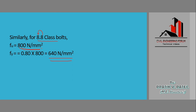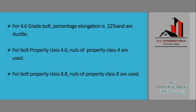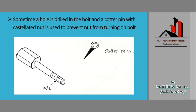For 4.6 grade bolts, the percentage elongation is 22%, making them ductile. Regarding the nut: for a bolt of property class 4.6, a nut of property class 4 is used. For a bolt of property class 8.8, a nut of class 8 is used. The yield strength digit is not considered in the nut classification.